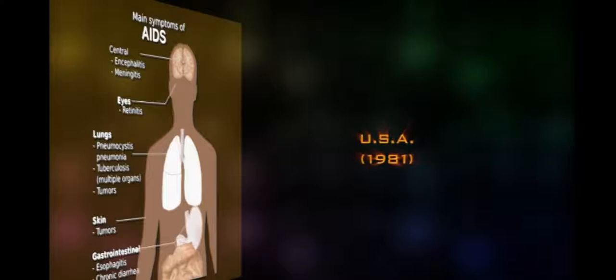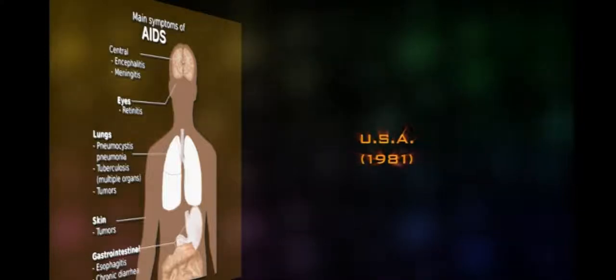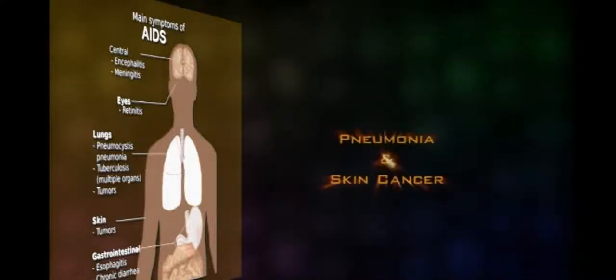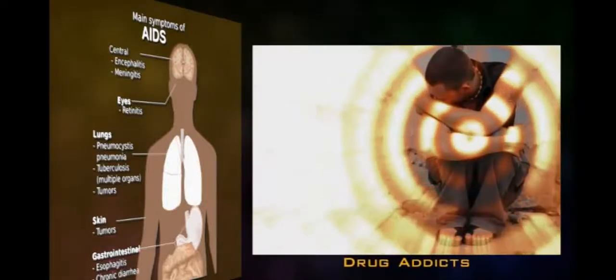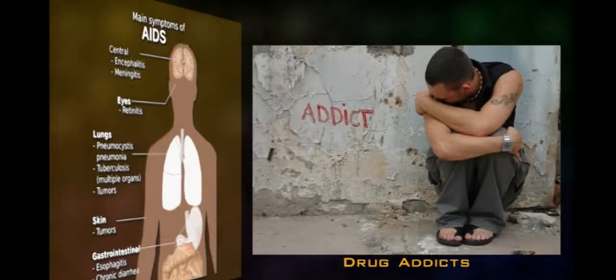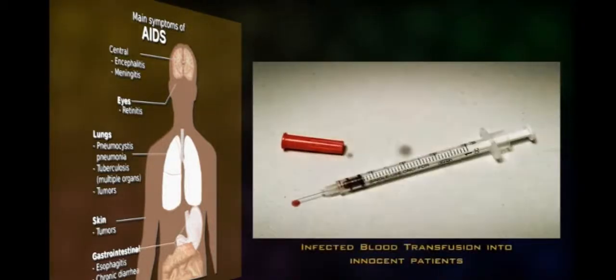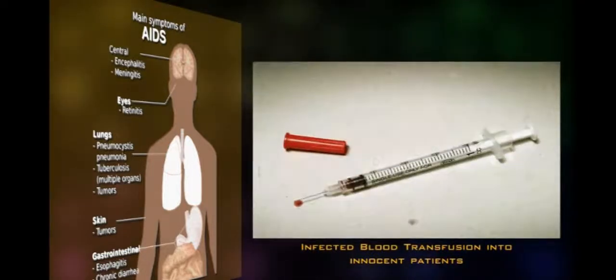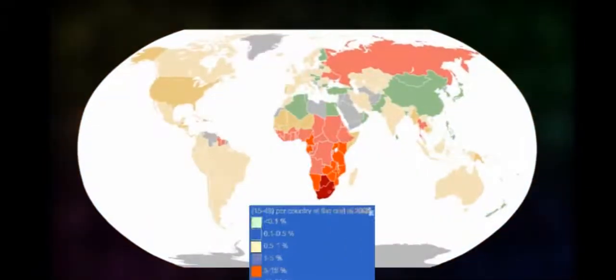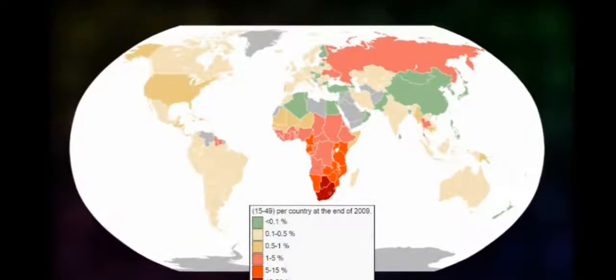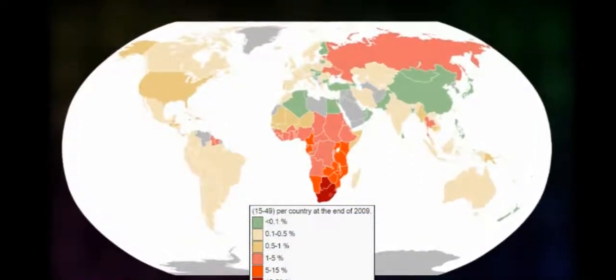AIDS was recognized for the first time in the USA in 1981. It was associated with two main diseases, namely pneumonia and skin cancer. Later, it was noticed among young homosexual men and drug addicts. The next group of AIDS patients included children and adults who received infected blood. These innocent people became victims of the dreadful disease. Even though scientists could recognize that AIDS was due to some infectious microbe, it created panic among all nations since there was no known measure to check the further spread of this yet unidentified agent.